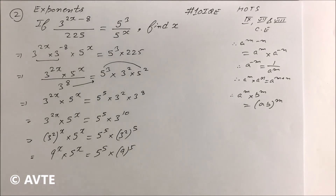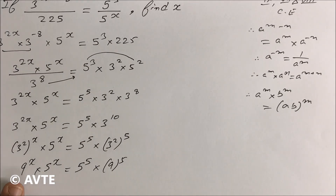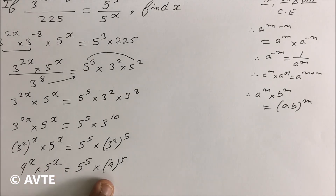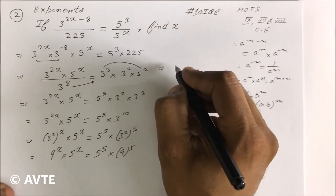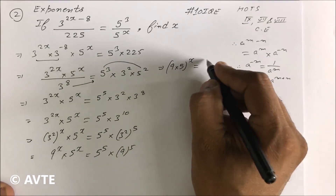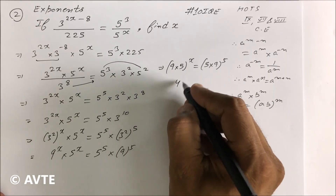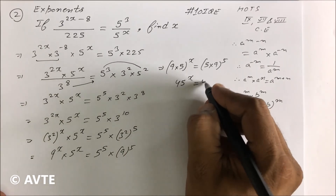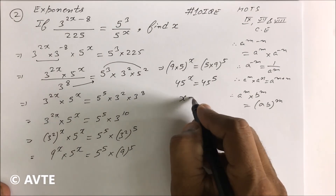Now you can see that the left side is (9 into 5) raised to power x, and the right side is (5 into 9) raised to power 5. Since the bases are the same on both sides, we can compare the powers directly. Therefore, x is equal to 5.